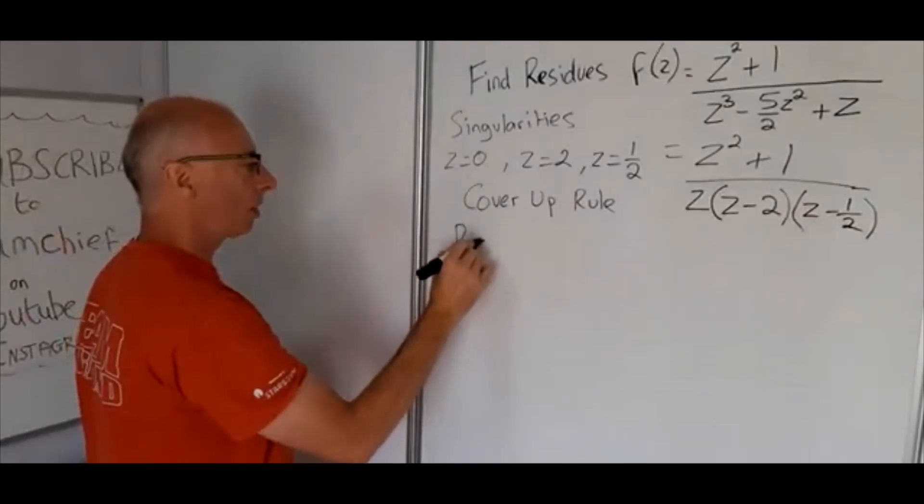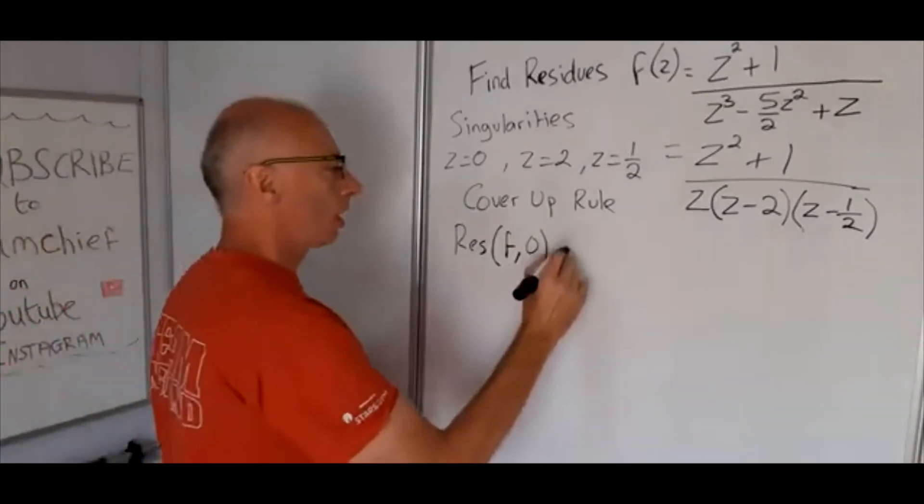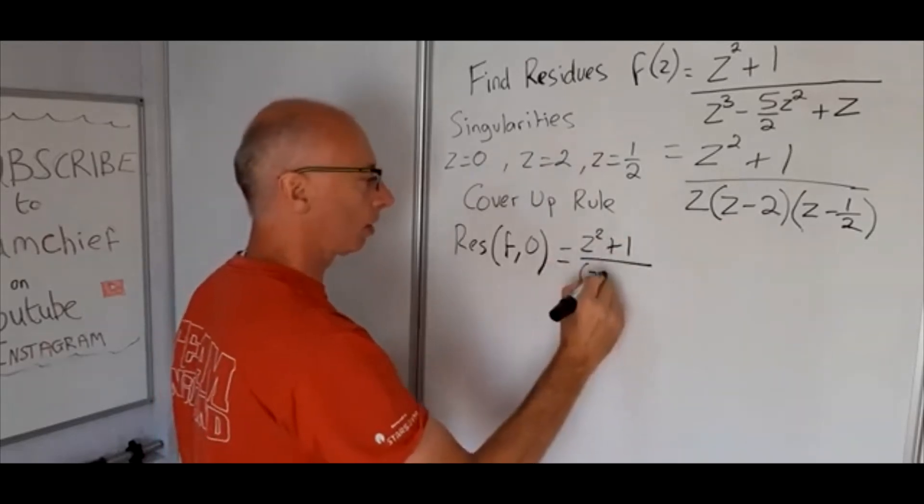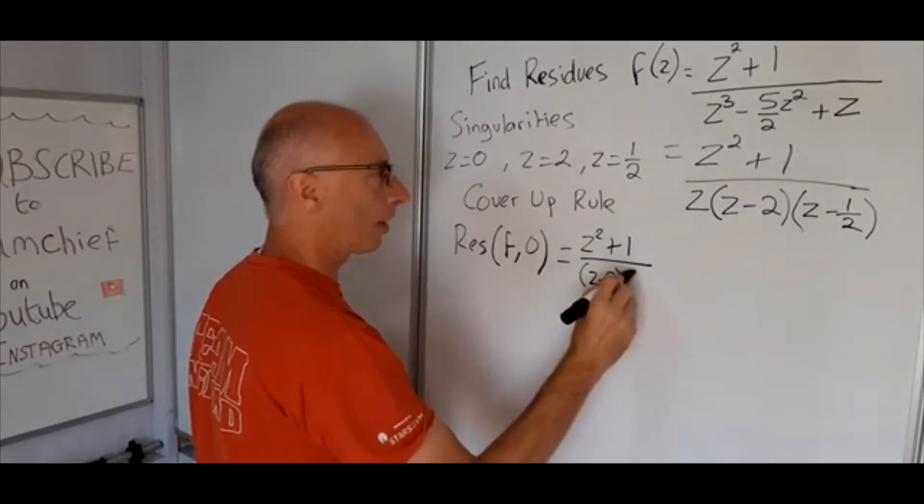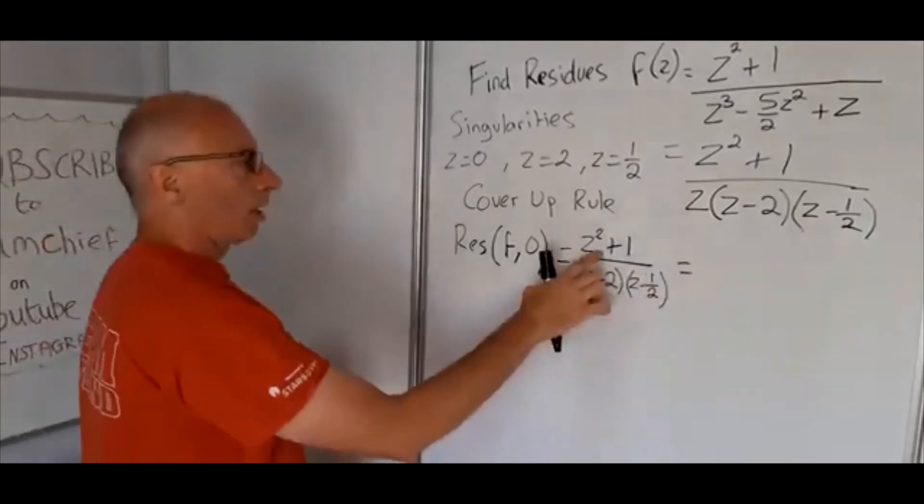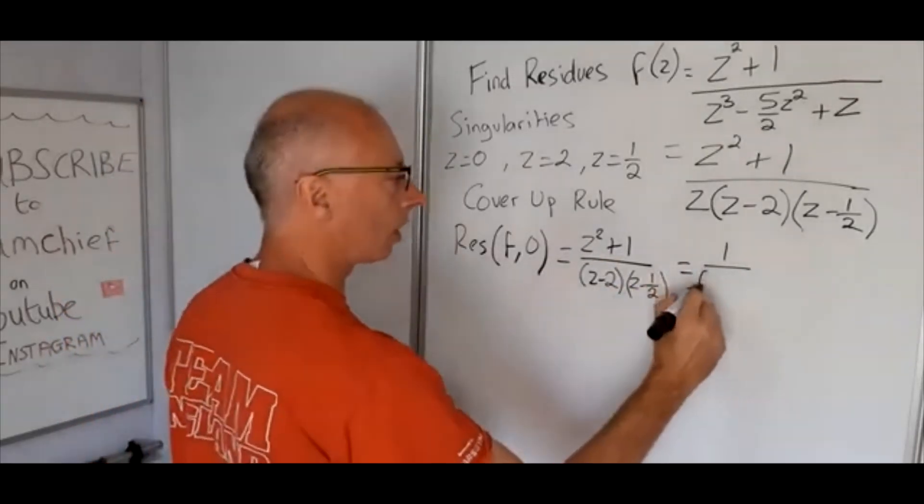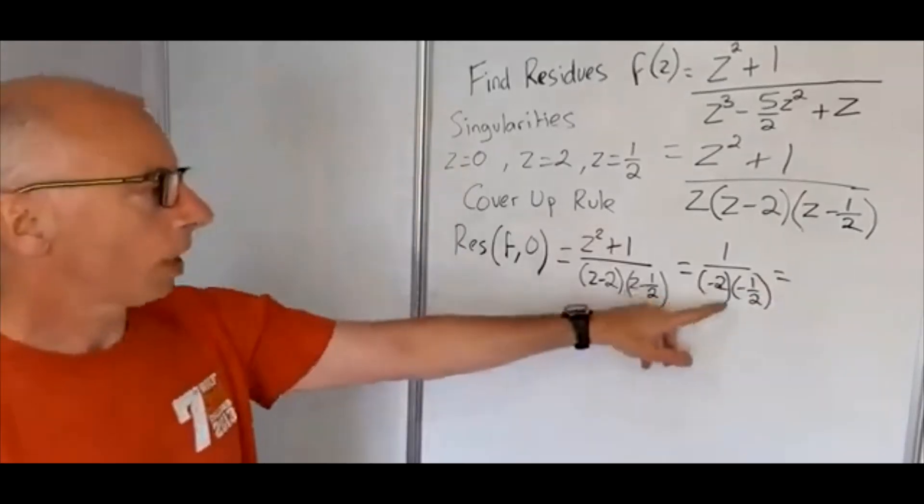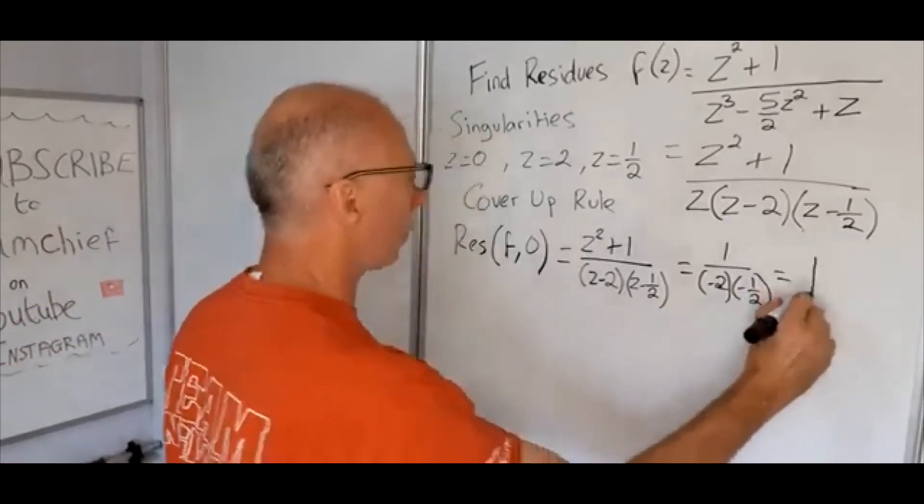So let's just write that out. So the residues of f at 0. We're going to have z squared plus 1 divided by z minus 2 and then z minus a half. Then all we do now is plug in the value 0 for all the z's. So 0 plus 1 gives us 1. 0 minus 2. 0 minus a half. So minus 2 times minus a half. That is going to give us positive 1. So therefore the answer for the first residue is 1 at 0.